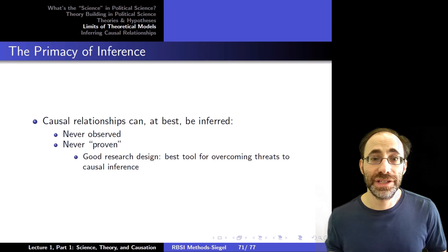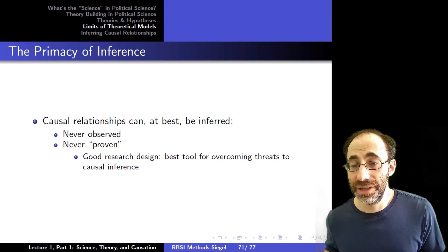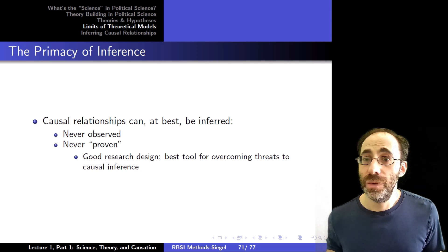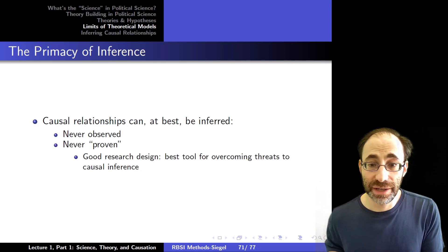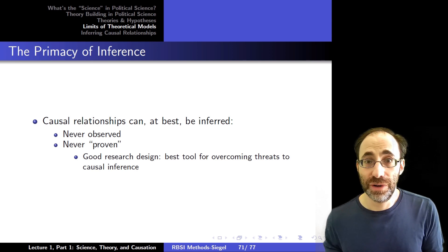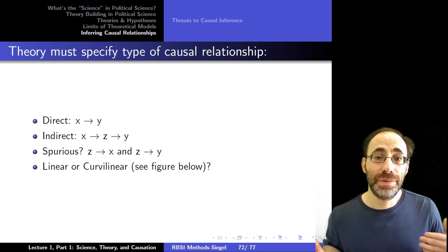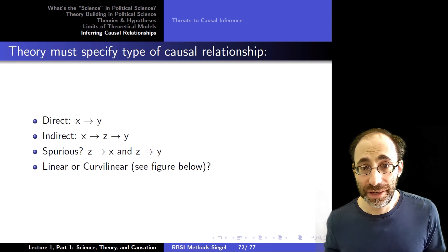Because of that, inference has primacy. All we're going to do ever is infer causal relationships, never observe them directly, never prove them directly. We're going to try to employ good research design to overcome threats to our inference to make it easier to get support for our theoretical claims. So I'm going to conclude now by talking briefly about what these threats of inference might be.